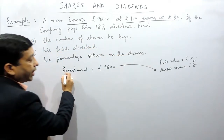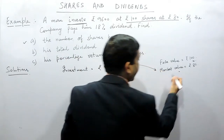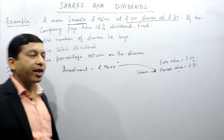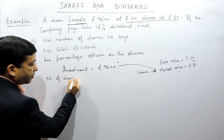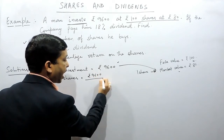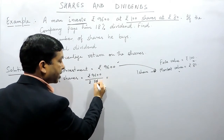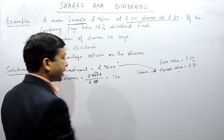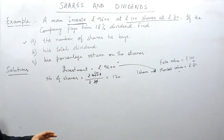The first part is the number of shares he buys. The total investment is rupees 9,600 and he purchased each share at the market value of rupees 80. So the total number of shares purchased equals the total investment divided by the price of one share: 9,600 divided by 80, which comes out to 120 shares.